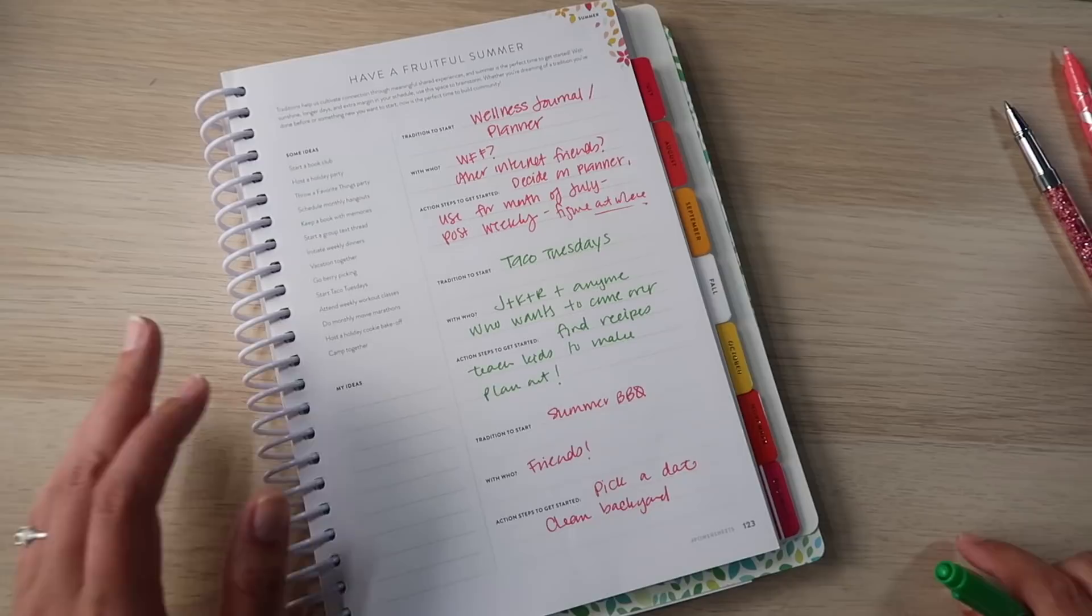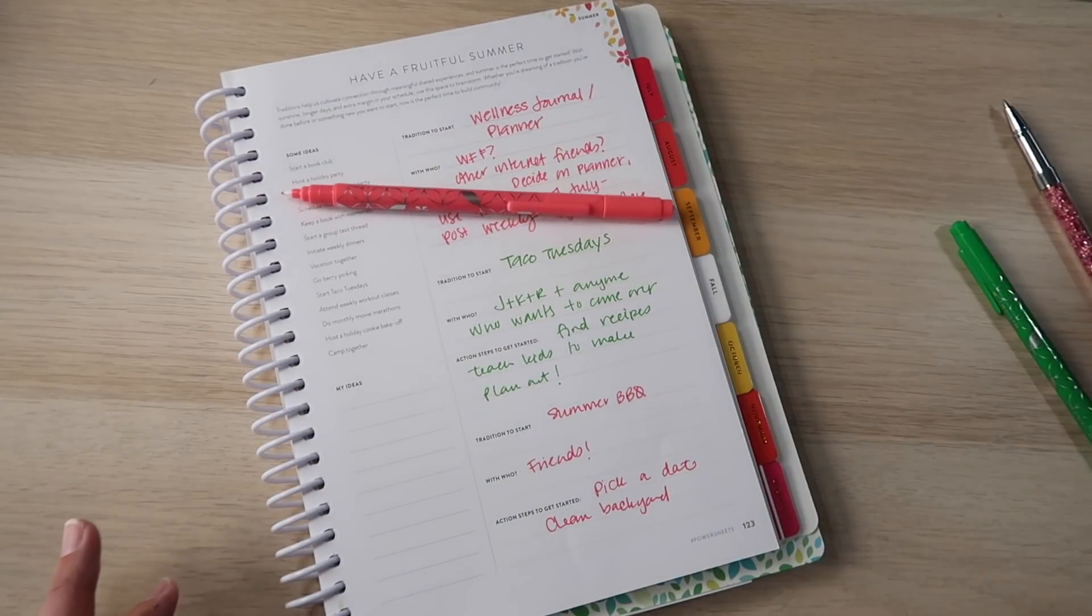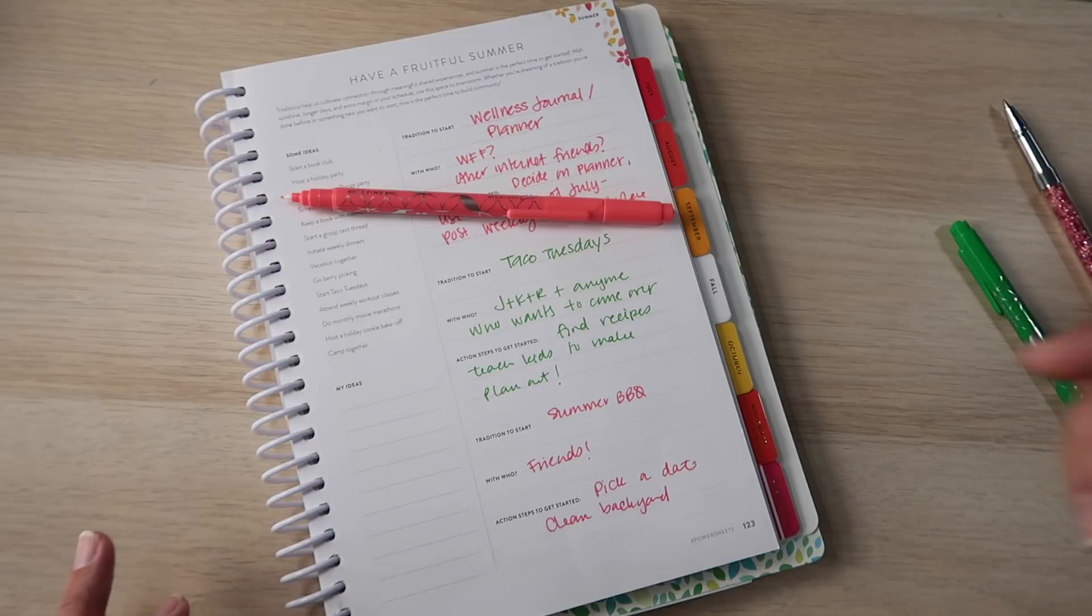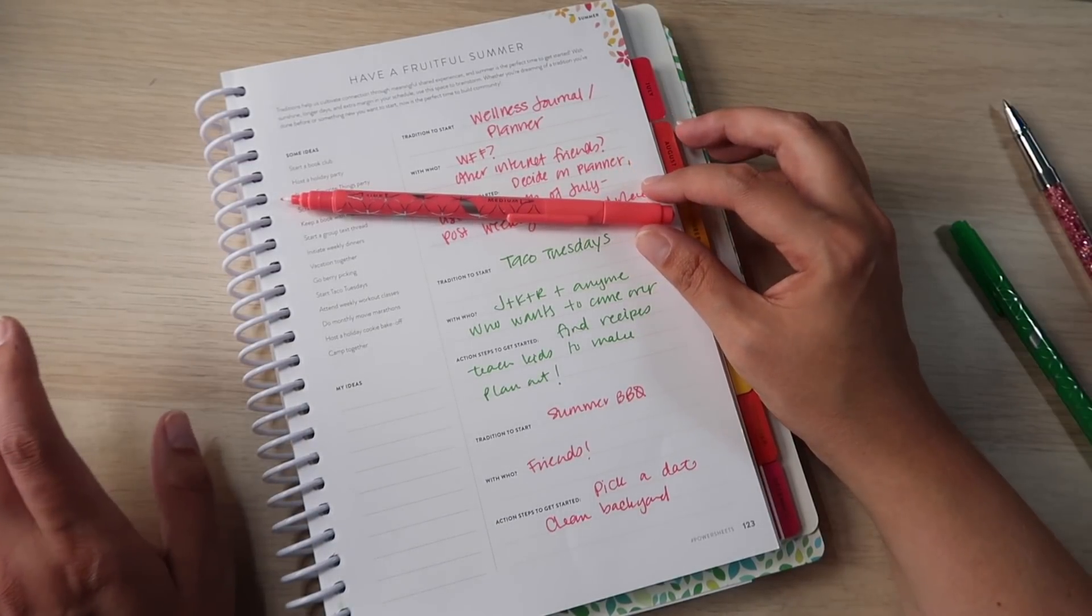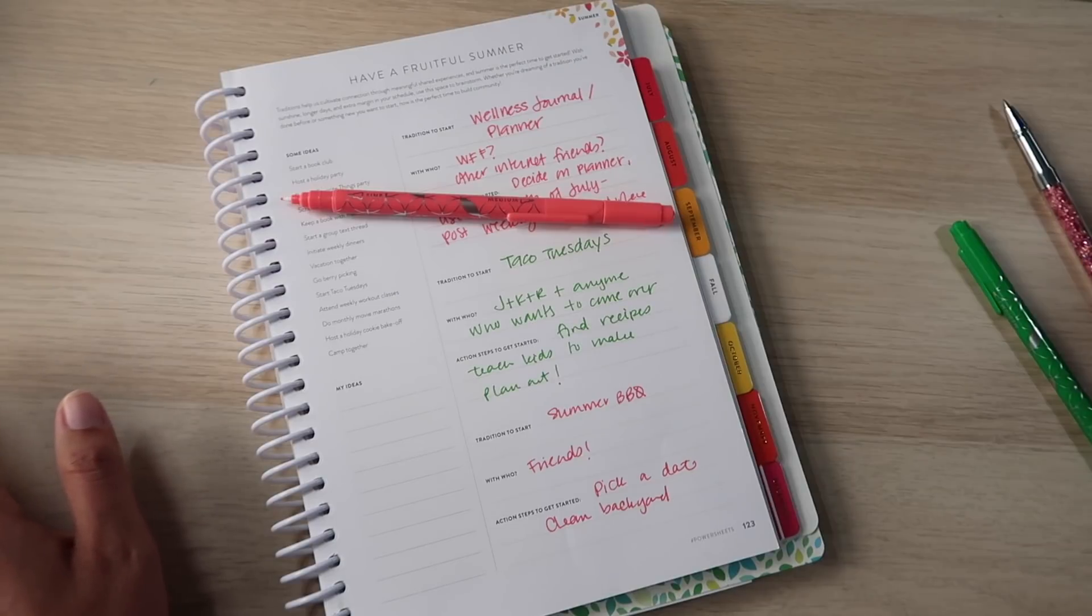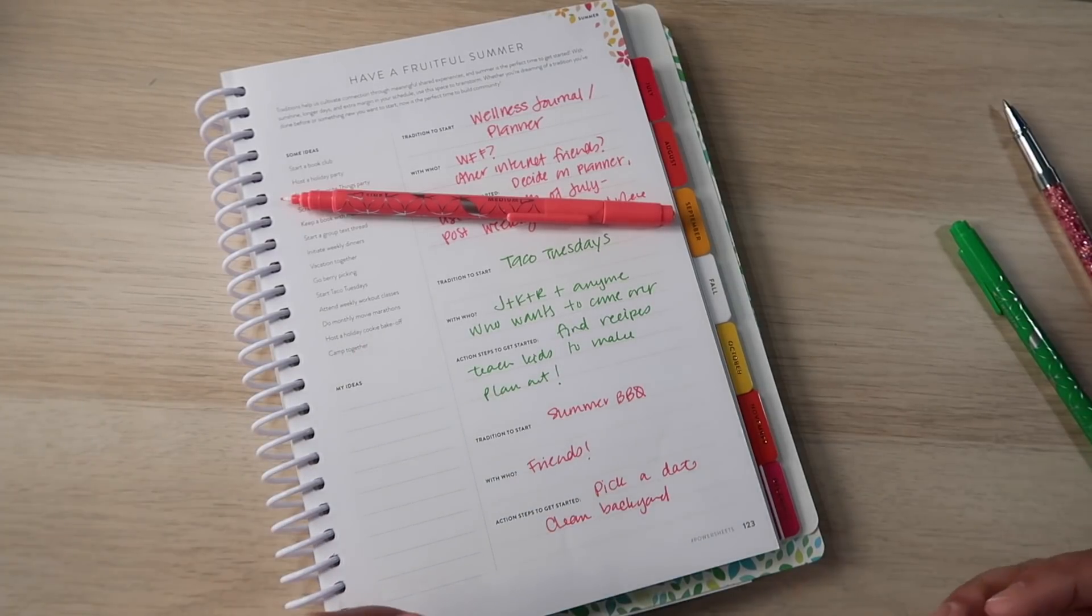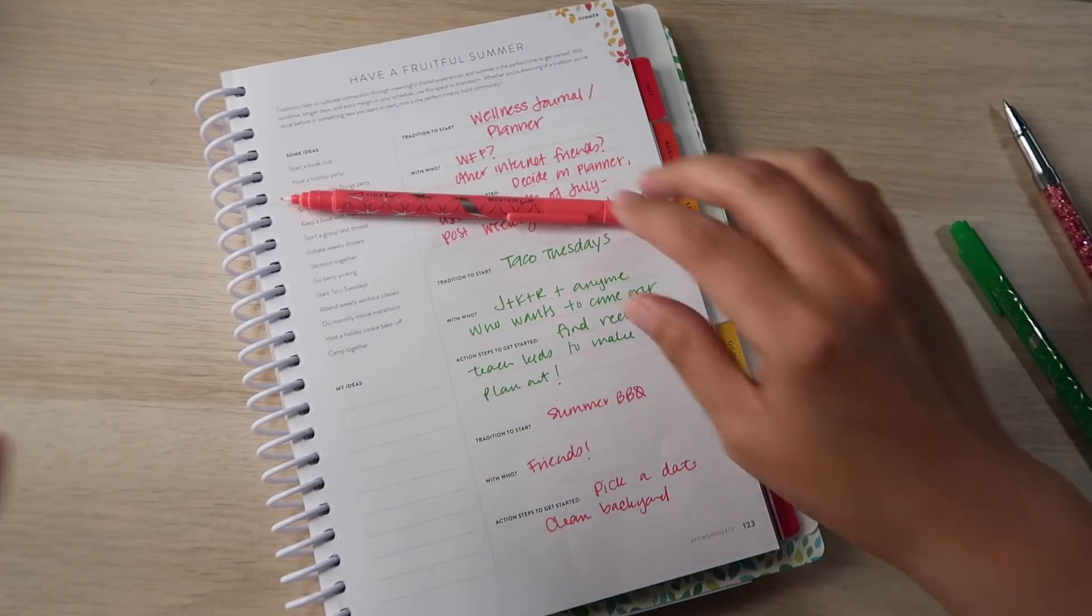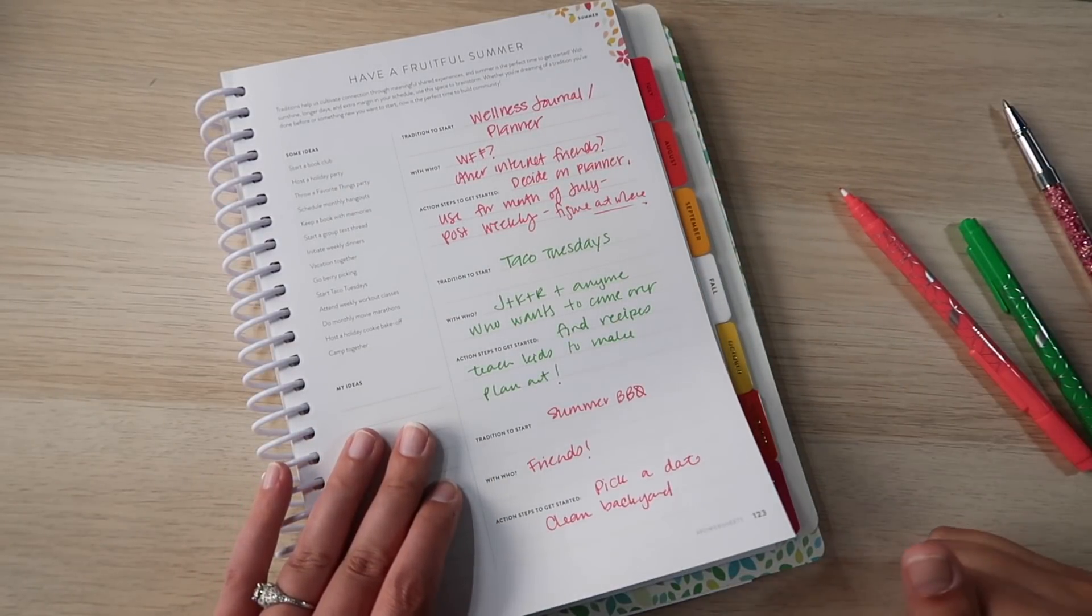And then tradition to start, a summer barbecue where we invite friends over. Jesse has wanted to do this for so long, so we need to do it. It'll probably have to be beginning of September for us because with my surgery and everything, but you know, have our friends. Either it can be a family barbecue when the kids are here or a barbecue for grownups when the kids aren't here. But we have various people we could invite. Pick a date and make sure the backyard's cleaned up because right now it's kind of a wreck as the house has been rearranged for painting.